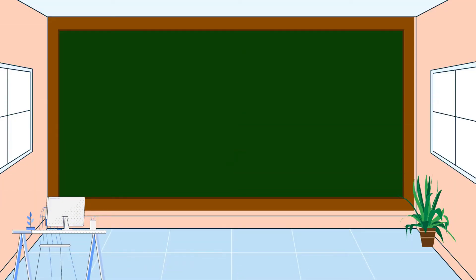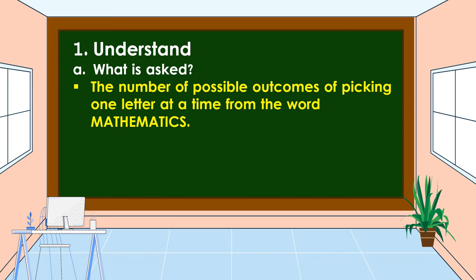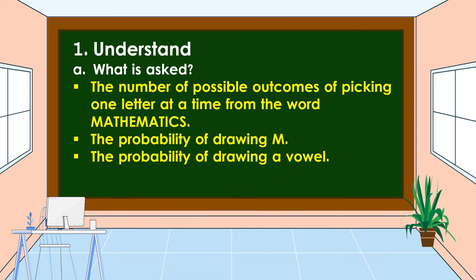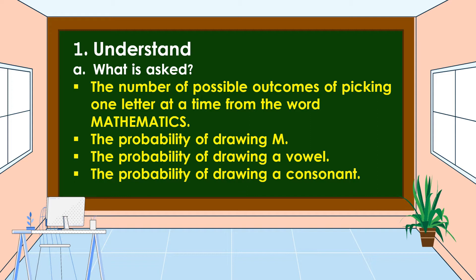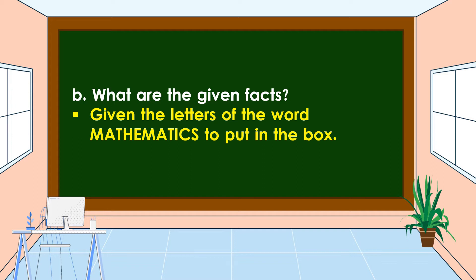How are we going to solve the problem? We're going to use the four-step plan. First, we're going to understand the problem. We should know what is asked. What is asked in the problem? It is asking for the number of possible outcomes of picking one letter at a time from the word MATHEMATICS, the probability of drawing M, the probability of drawing a vowel, and the probability of drawing a consonant. We should also know the given facts: the letters of the word MATHEMATICS put in the box.